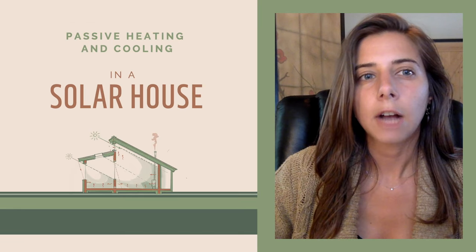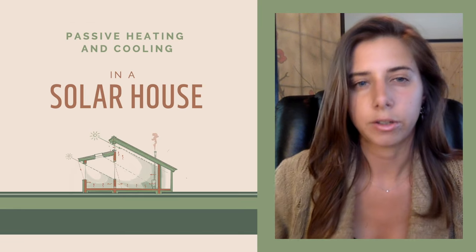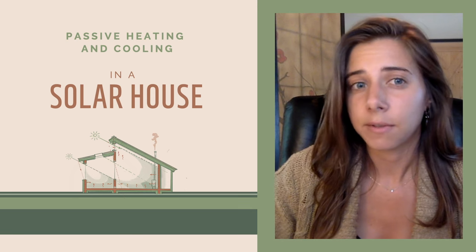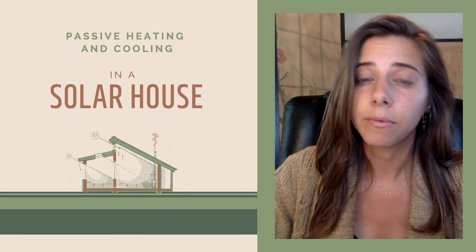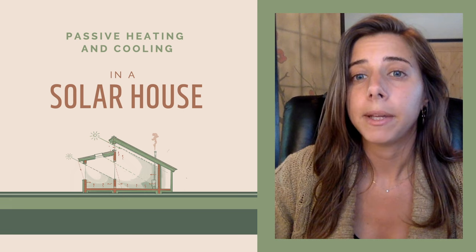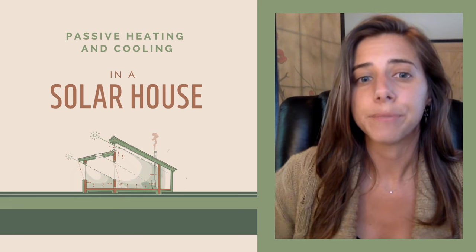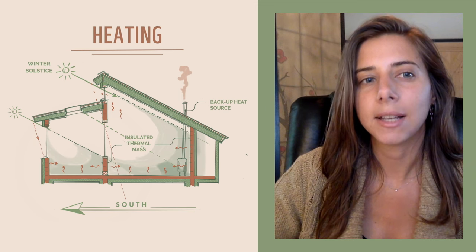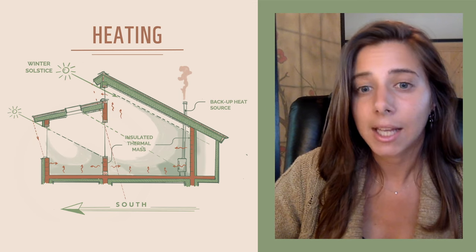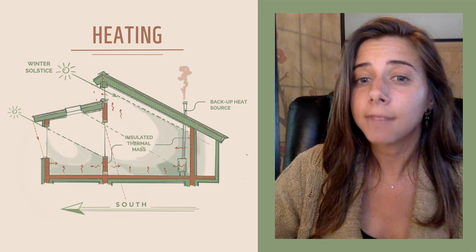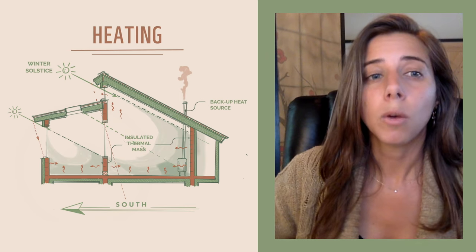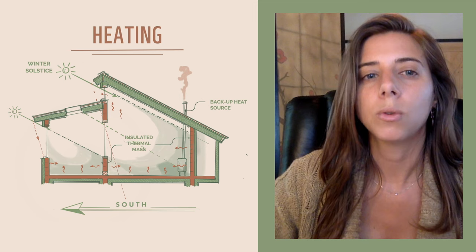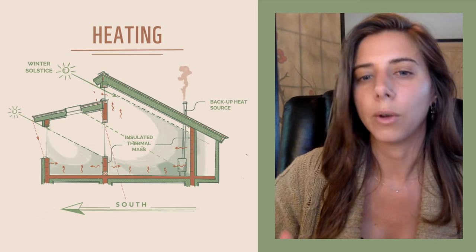A solar house is one of the oldest strategies for designing a comfortable building. It utilizes design features such as solar orientation, thermal mass, backup heat sources, and natural ventilation. The main component of passive heating is utilizing solar heat — it's free. We want to orient the building facing the equator to capture the most winter sun that's going to be low in the horizon.